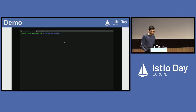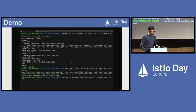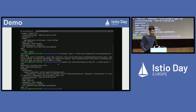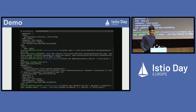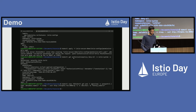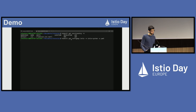Now let's take a look at communication inside the mesh. I have a strict peer authentication in the Istio system namespace, and if I try creating a permissive policy that overrides that, we see that it will get blocked by Gatekeeper. I also have a deny-by-default authorization policy, so if my sleep application tries to communicate with httpbin, it returns a 403 because that communication is not authorized. Now let's take a look at egress traffic. I needed to explicitly add a service entry for cnn.com to make it accessible from inside the mesh, because I have the outbound traffic policy in the mesh config set to registry only.